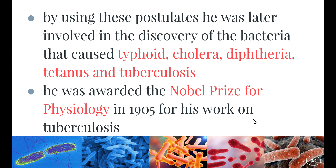Using these postulates, Robert Koch was later involved in the discovery of bacteria causing a number of diseases that killed many people at the time, including typhoid, cholera, diphtheria, tetanus, and tuberculosis. In 1905, five years before his death, he was awarded the Nobel Prize for Physiology for his work on tuberculosis.